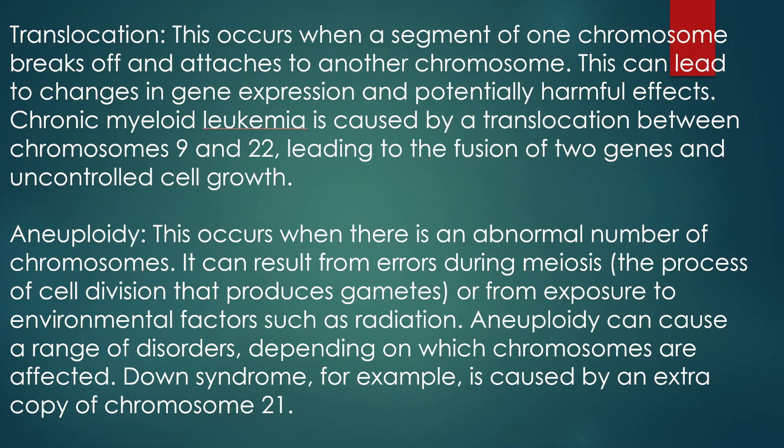And the last one is Aneuploidy. This occurs when there is an abnormal number of chromosomes. It can result from errors during meiosis, the process of cell division that produces gametes, or from exposure to environmental factors such as radiation. Aneuploidy can cause a range of disorders depending on which chromosomes are affected. Down syndrome, for example, is caused by an extra copy of Chromosome 21.